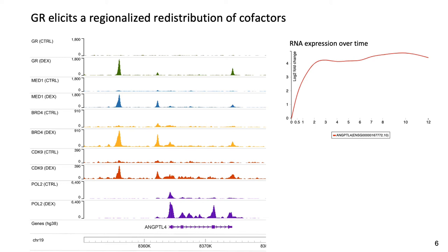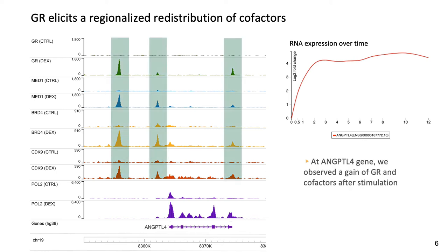We were first interested in the ANGPTL4 gene, which is a known direct target of dex stimulation. TRACS represent the binding site of GR and several co-factors — MED1, BRD4, and CDK9 — before and after stimulation. Here, we can observe a gain of GR and co-factors after stimulation in the vicinity of the ANGPTL4 gene.